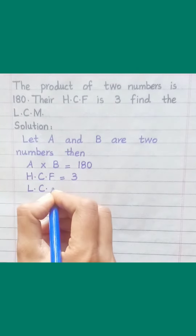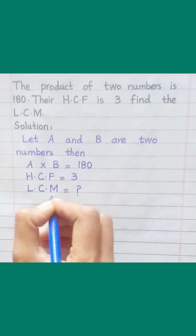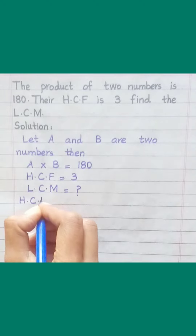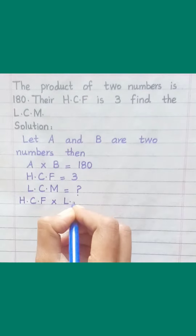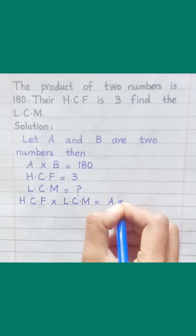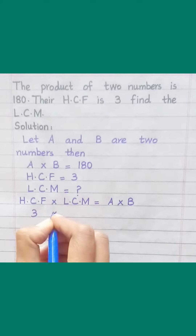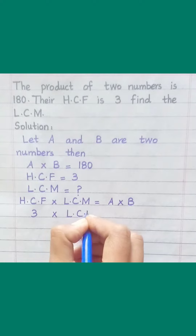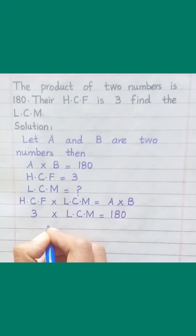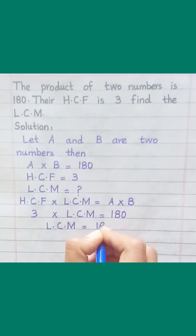Find the LCM. HCF multiplied by LCM equals A multiplied by B. So, 3 multiplied by LCM equals 180. LCM equals 180 divided by 3.